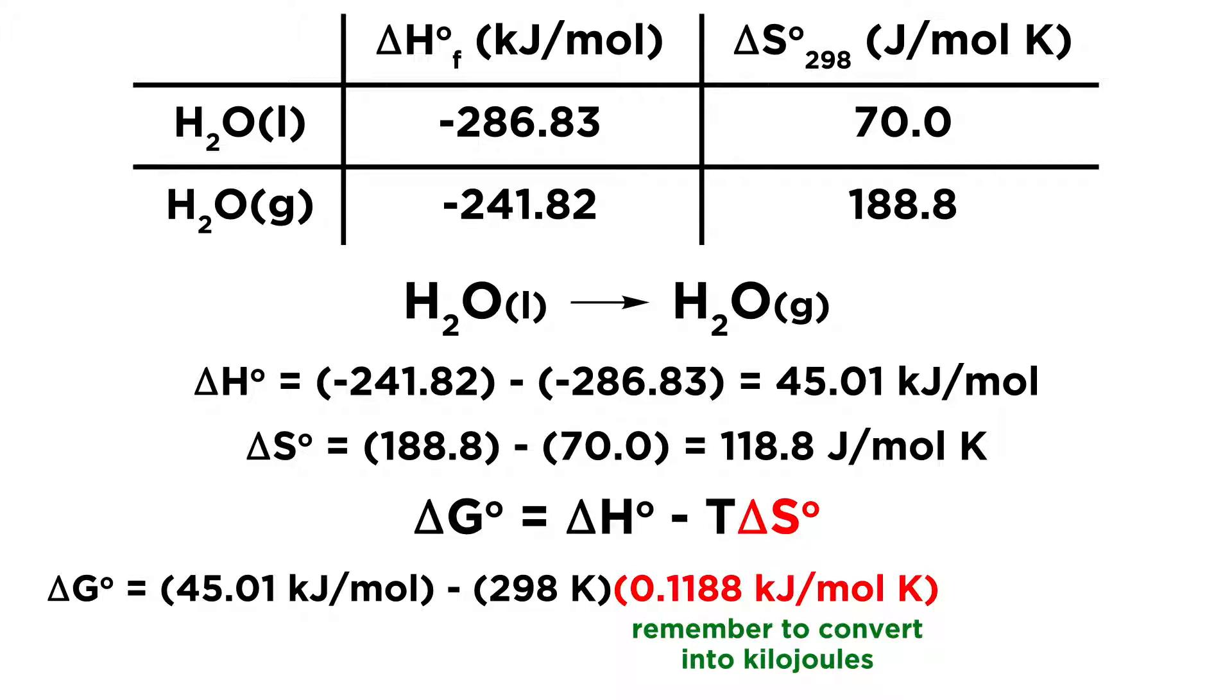And then, for delta S, we're going to take the delta S value that we had, but this is very important. We need to make sure that the units on delta H and delta S agree. Delta H had kilojoules, so the easiest thing to do here is to convert our delta S from joules per mole K to kilojoules per mole K, which means we have to divide by 1,000. So, that is going to be 0.1188 kilojoules per mole Kelvin. A lot of students forget to do that, and that will give you an incorrect answer. So, make sure that your units agree. And if we do the arithmetic, that gives us 9.6 kilojoules per mole.